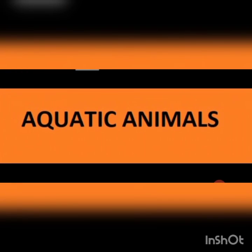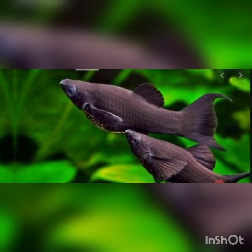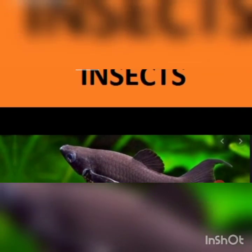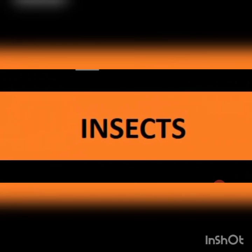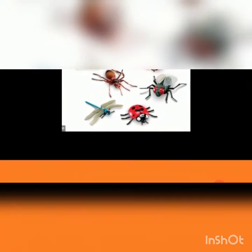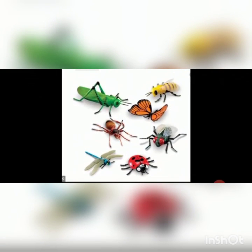Aquatic animals are animals that live in water. Fish also lay eggs — fish lay hundreds and hundreds of eggs in water. Insects like mosquitoes, ladybirds, and butterflies also lay hundreds of eggs.